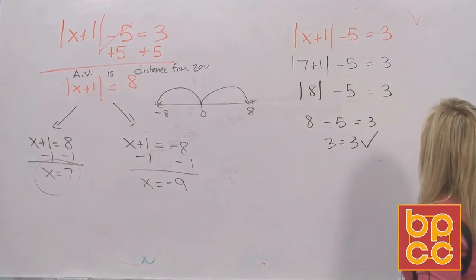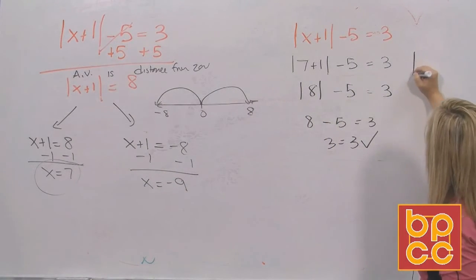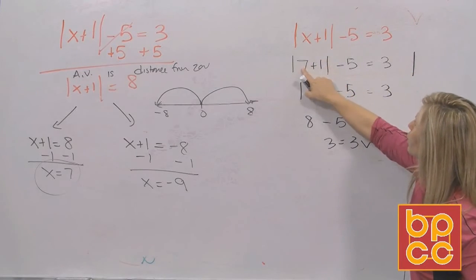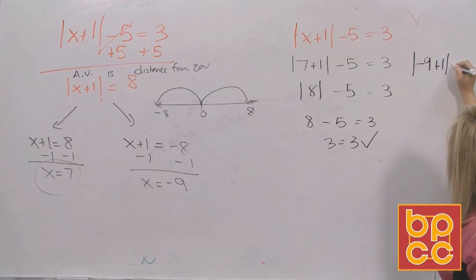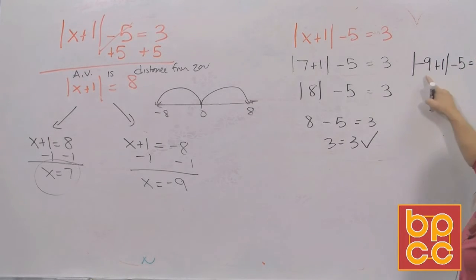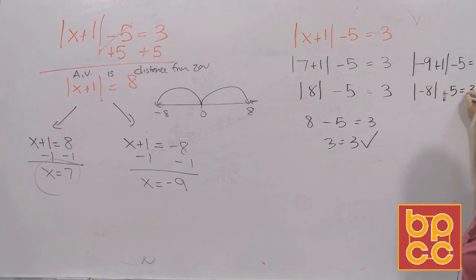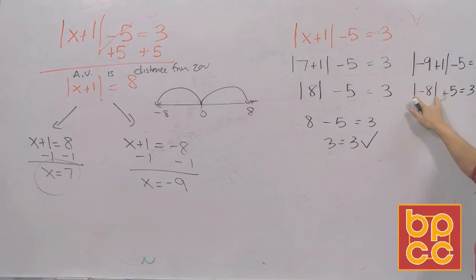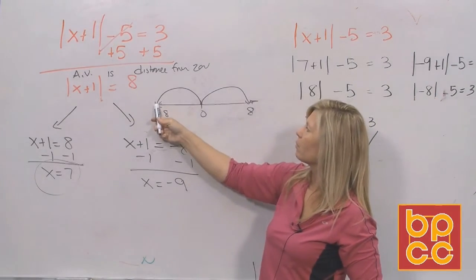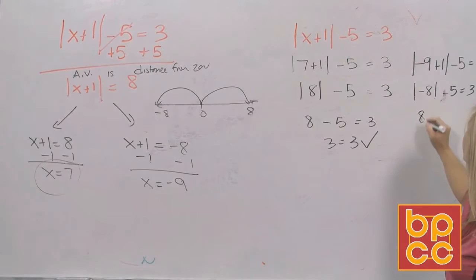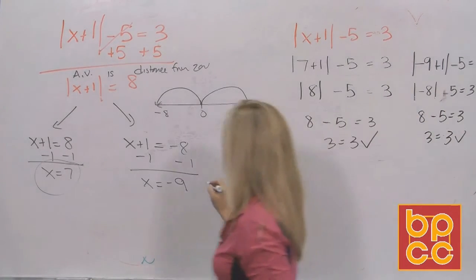Now check the other solution. Go back to the original and use negative 9. There are two numbers inside the absolute value, so work that first: negative 9 plus 1 is negative 8. What is the absolute value of negative 8? How far am I from zero? If I'm at negative 8 on the number line, I'm 8 away from zero. Is 8 minus 5 equal to 3? Sure it is. So we have two solutions.